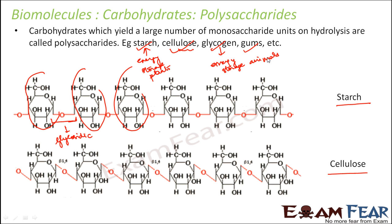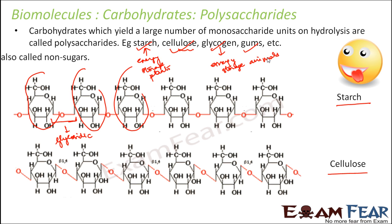So because of their structures, you can understand why polysaccharides are used as a storehouse of energy, whereas monosaccharides are used as instant sources of energy. This was a brief introduction to all three types of carbohydrates — monosaccharides, oligosaccharides, and polysaccharides. Now we will spend some time to understand some examples of each of these types.